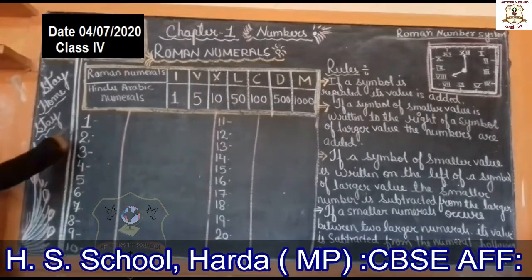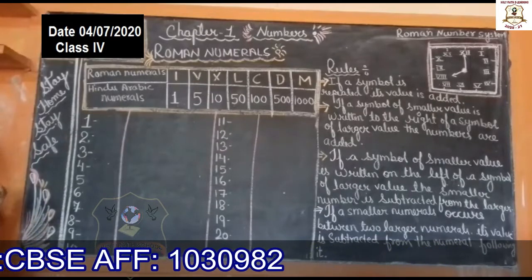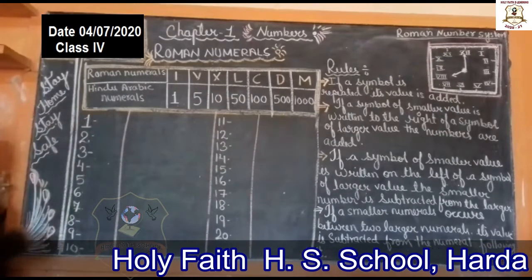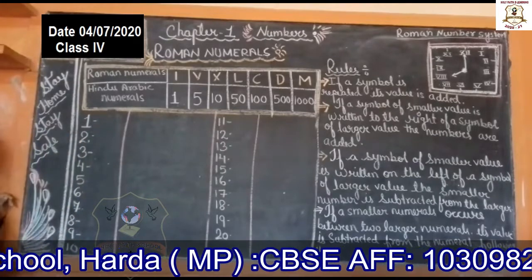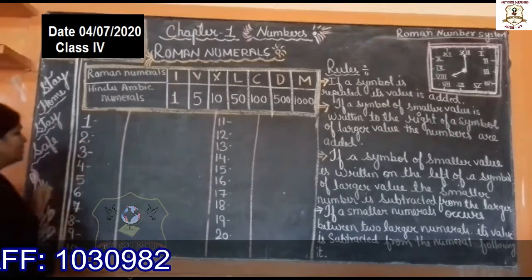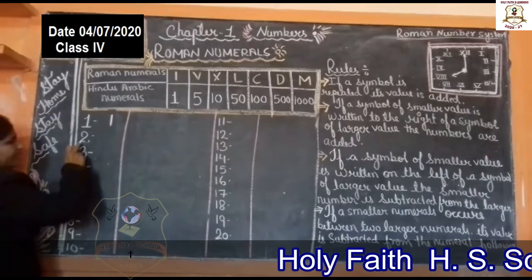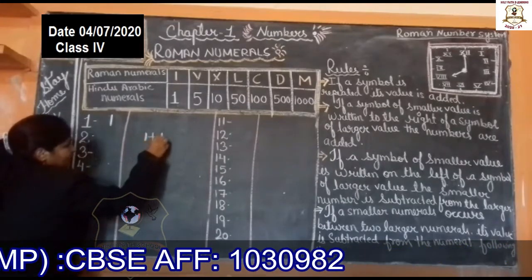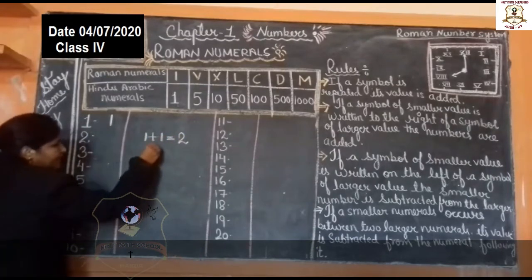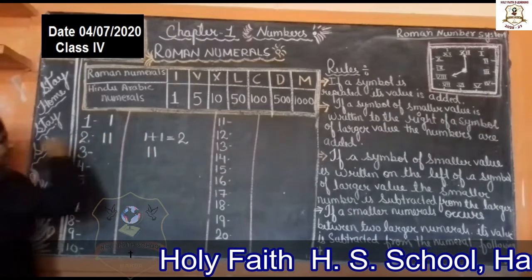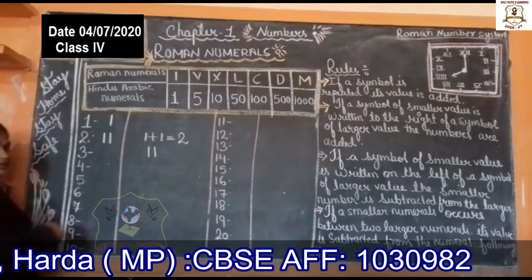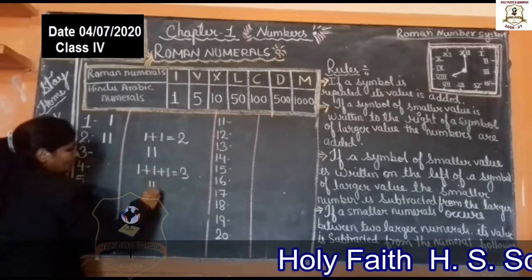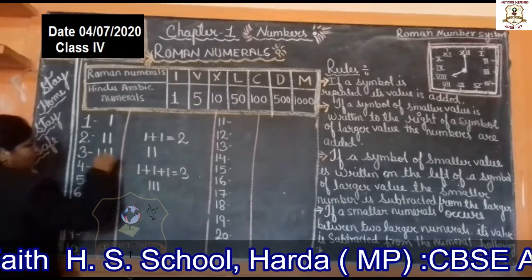Now, I have placed some numbers here. Today we will read how to form Roman numerals from Hindu-Arabic numerals. So, for 1, this symbol is given — we will write I. Now we have to make 2. One plus one is equal to two, so we will write II. For three, one plus one plus one is equal to three, so we will write III.